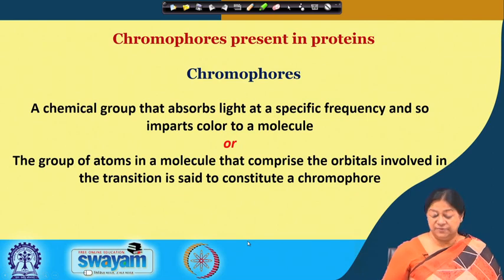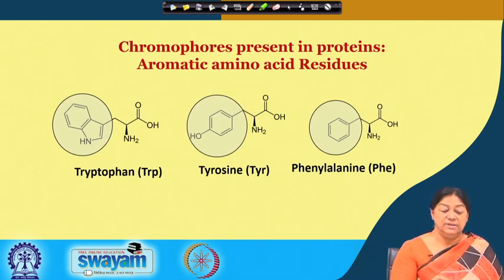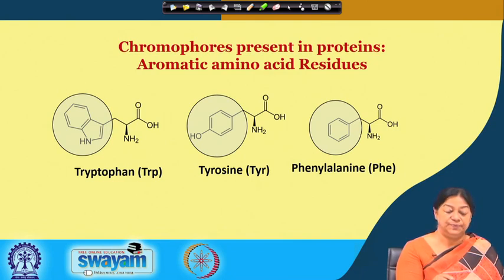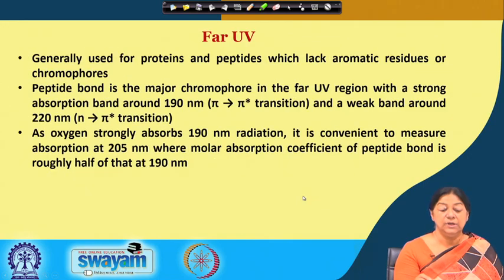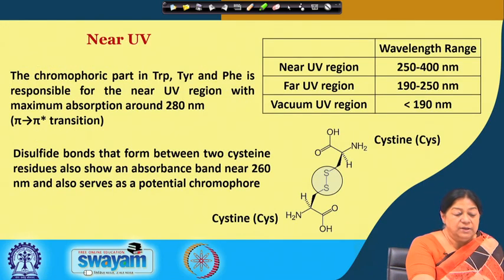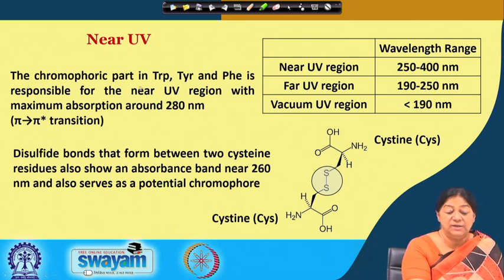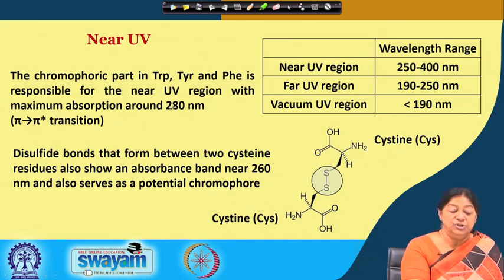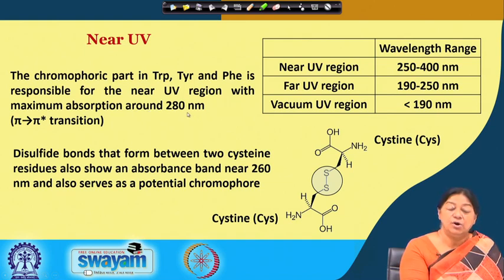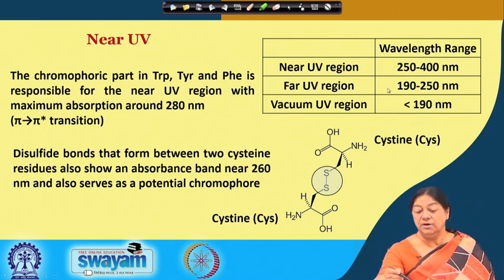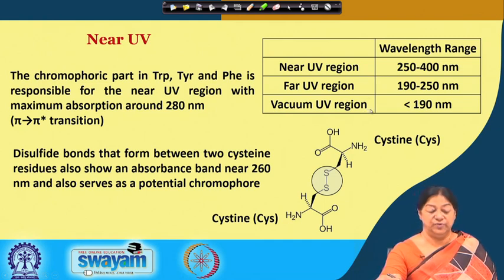The specific chromophores present in proteins are the aromatic amino acid residues: tryptophan, tyrosine, and phenylalanine. These have a specific chromophoric part responsible for absorption in the near UV region, with maximum absorption around 280 nanometers, corresponding to the pi to pi-star transition. Looking at the regions, we have the near UV region, the far UV region, and the vacuum UV region.